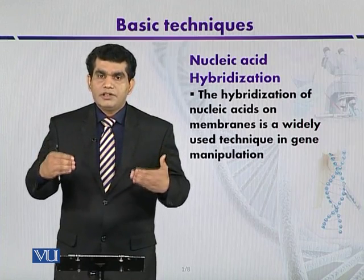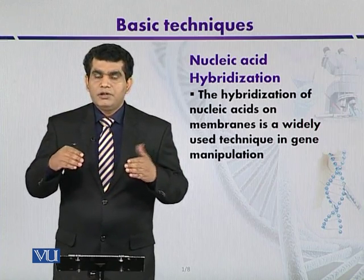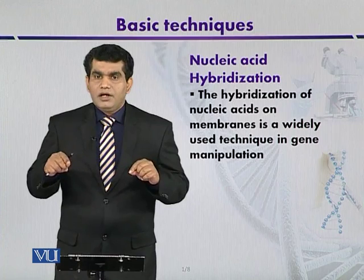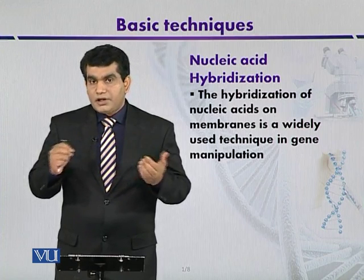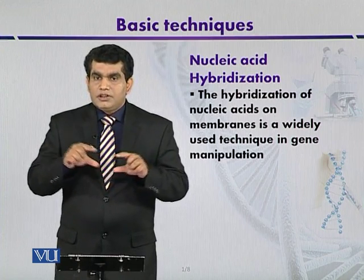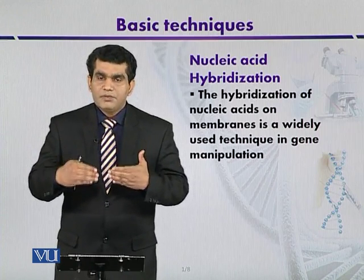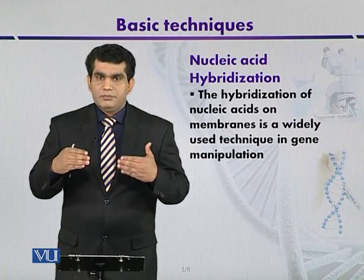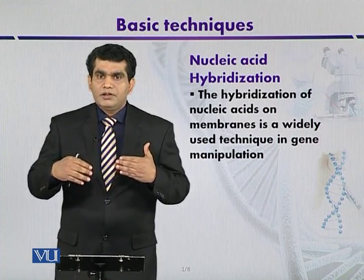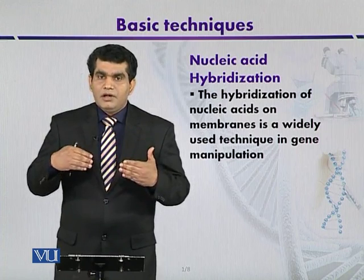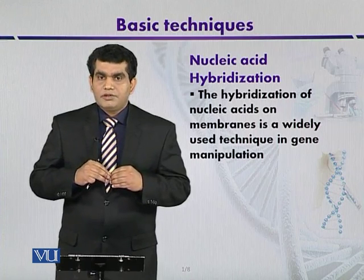A nucleic acid probe is a single strand of DNA or RNA that is used to detect the complementary sequence in the target DNA. The sequence of the gene of interest is known, and the probe also has the complementary sequence. This probe is labeled with radioactive substances like Phosphorus-32, so that later on it can be detected by autoradiography. We are going to discuss autoradiography after some time.